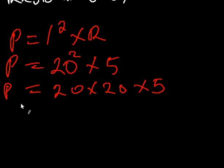So our power becomes 20 multiplied by 20, which is 20 squared, multiplied by 5.